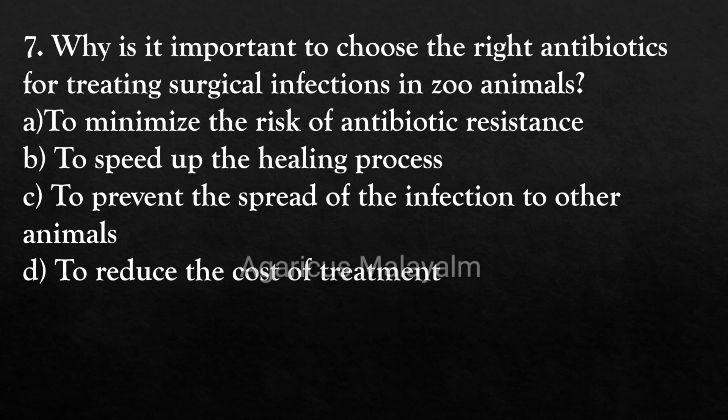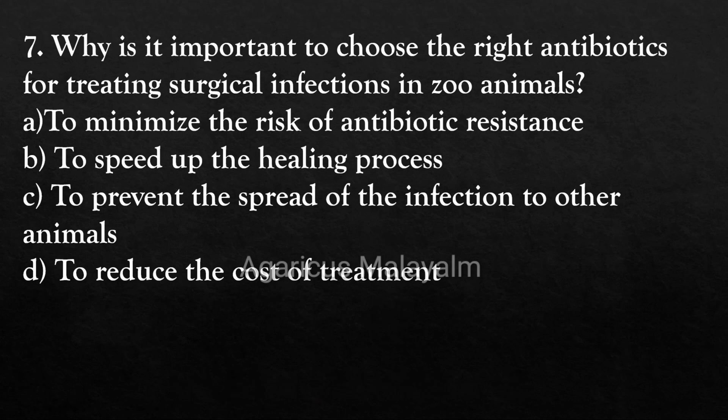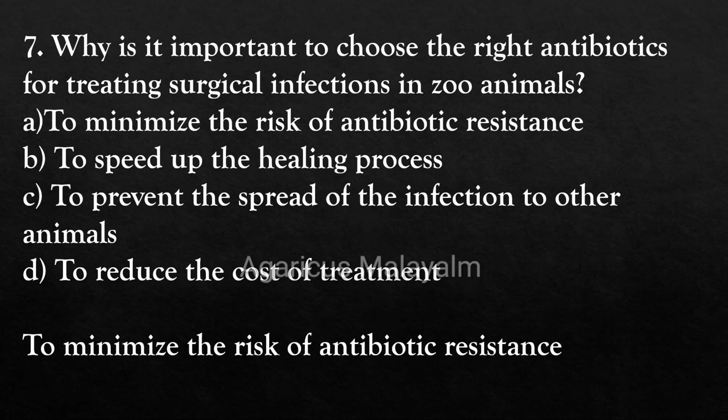Seventh question: Why is it important to choose the right antibiotics for treating surgical infections in zoo animals? Option A: to minimize the risk of antibiotic resistance. Option B: to speed up the healing process. Option C: to prevent the spread of infection to other animals. Option D: to reduce the cost of treatment. Correct answer: Option A, to minimize the risk of antibiotic resistance.